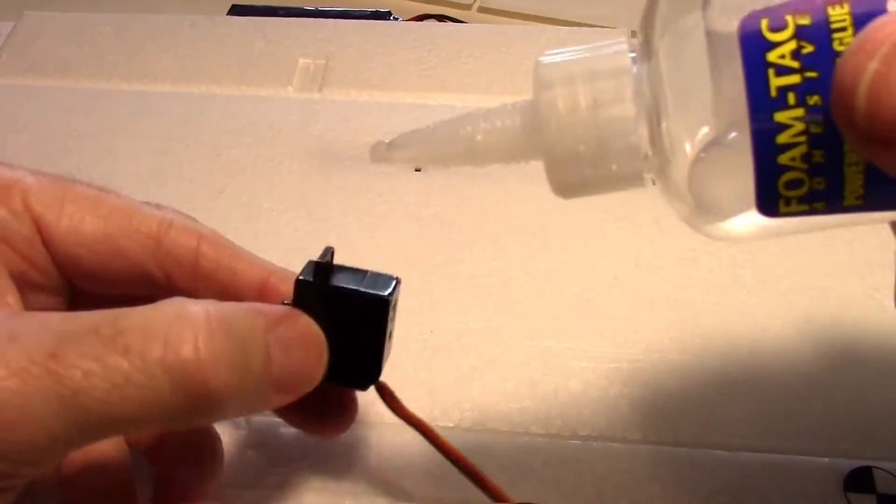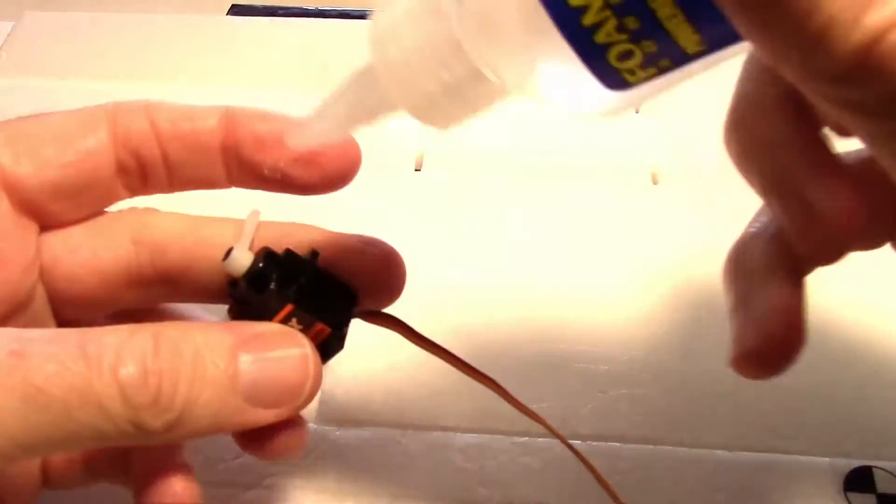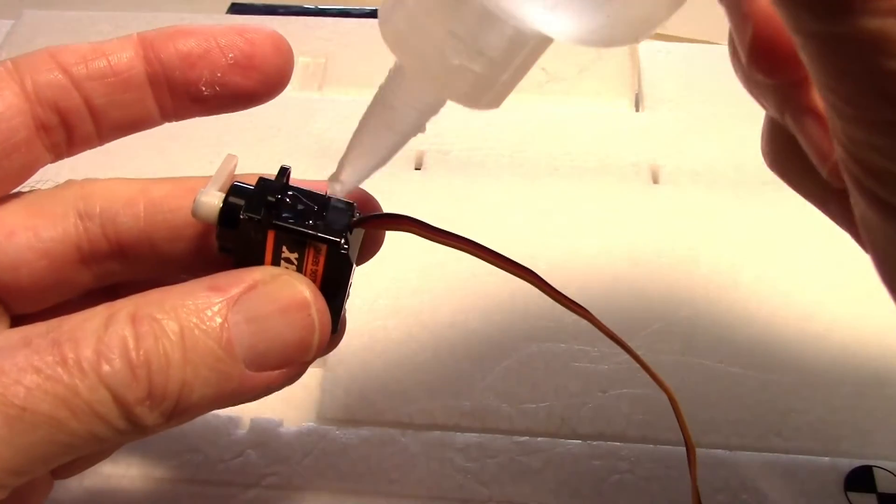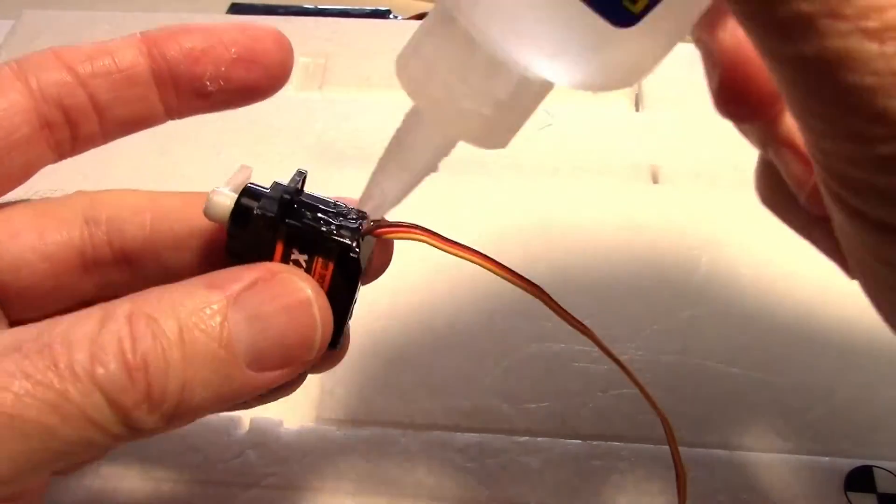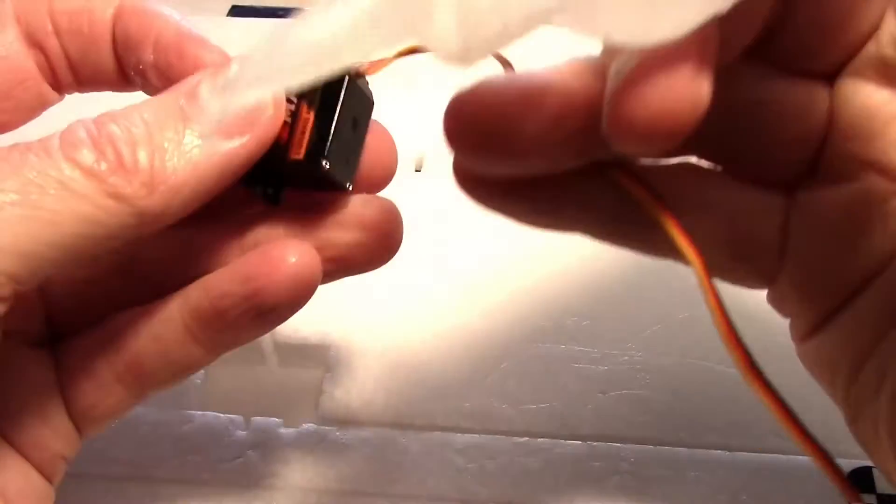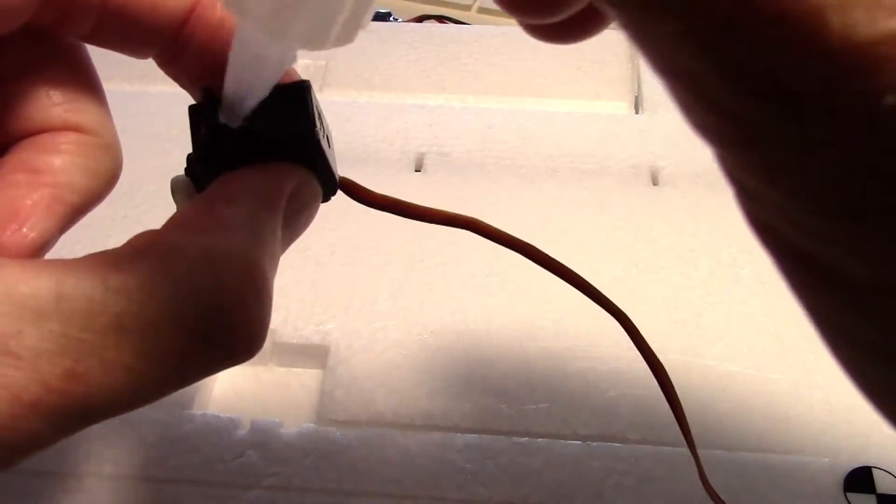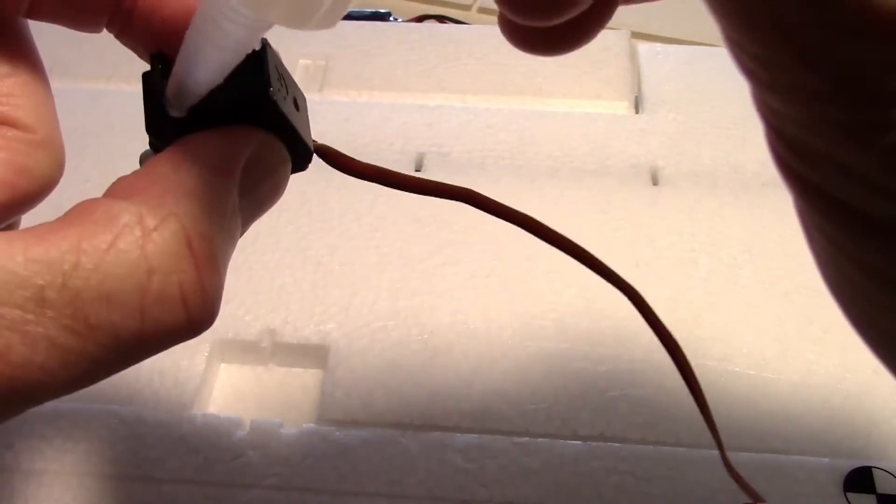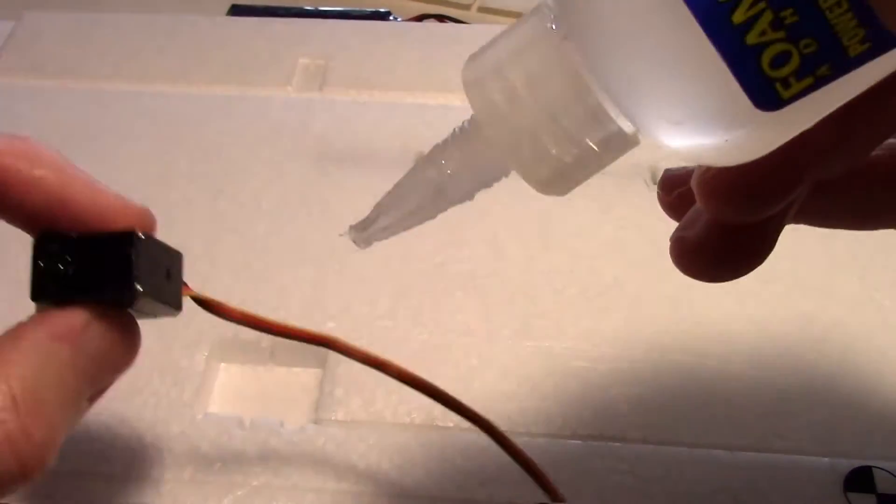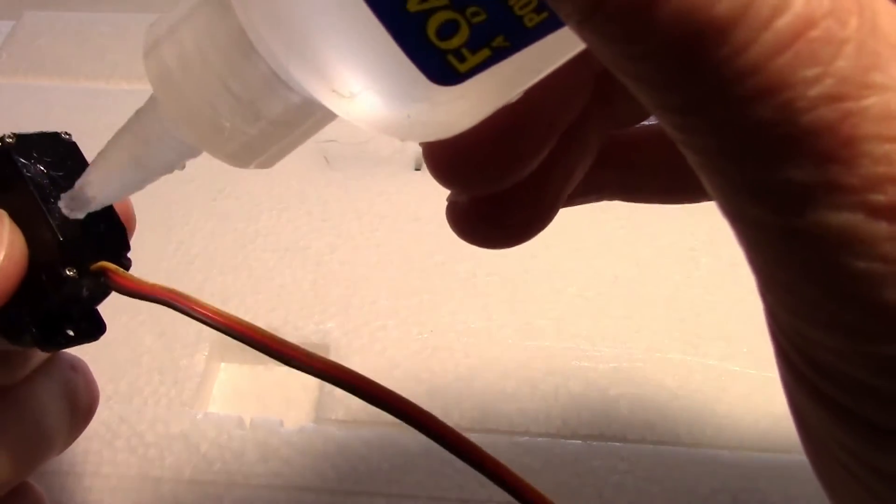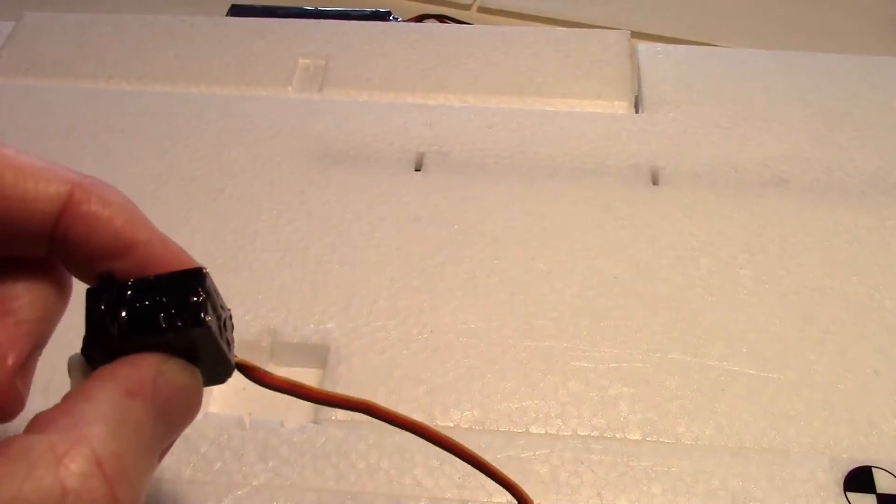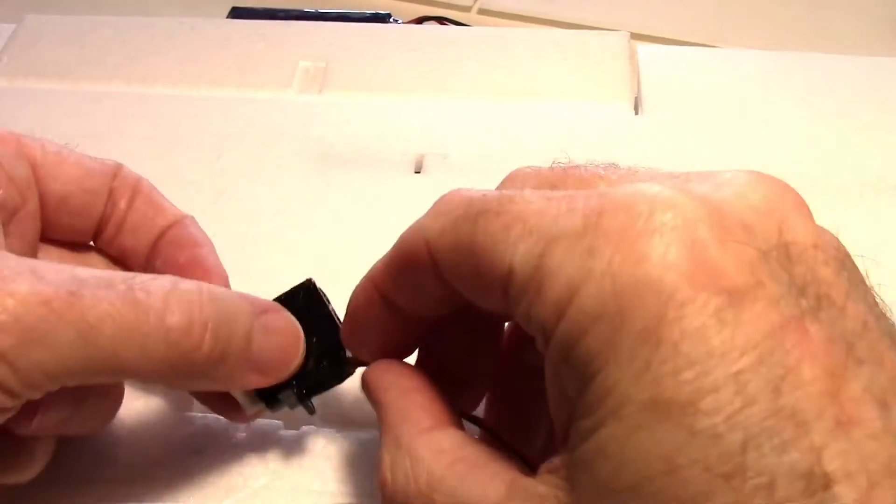Before I run that wire, let's just go ahead and tack it in with some of this foam tack cement. Just put a little on there. Once it goes in there it isn't coming out. I'm not even going to put any on the bottom because I feel like it's going to be in there so good, and if I do want to get it out I don't want to make it too hard.